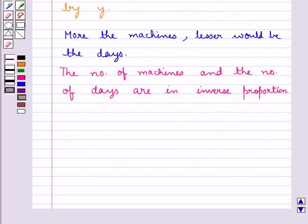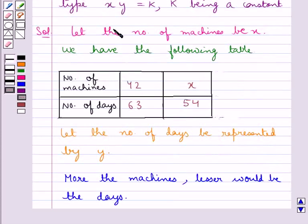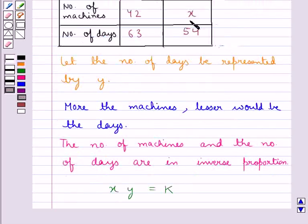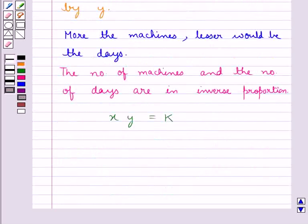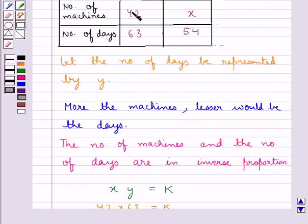So from the key idea we say, x multiplied by y is equal to k which is the constant, where x is the number of machines and y is the number of days. Using this table and this relation we say that 42 multiplied by 63 is equal to k, where 42 is x, the number of machines, and 63 is y, the number of days.